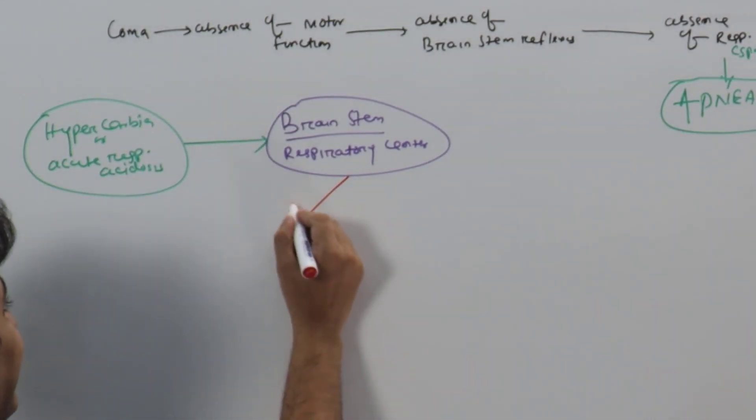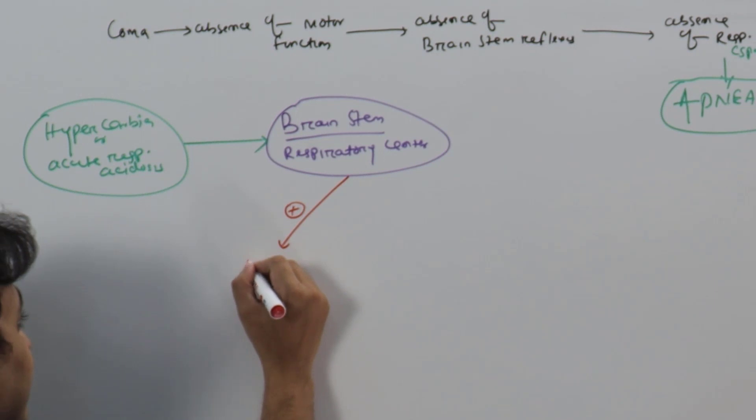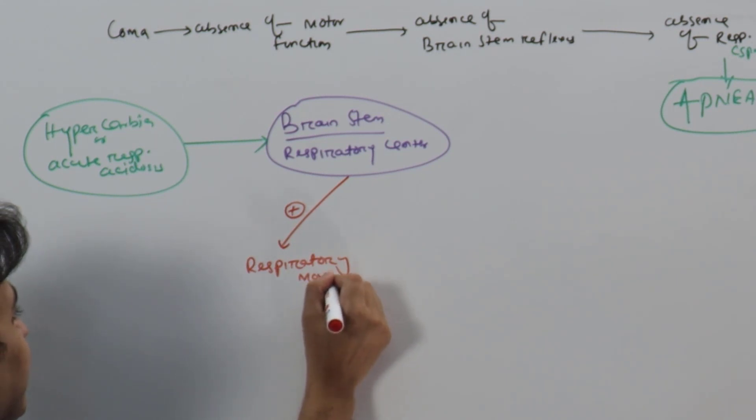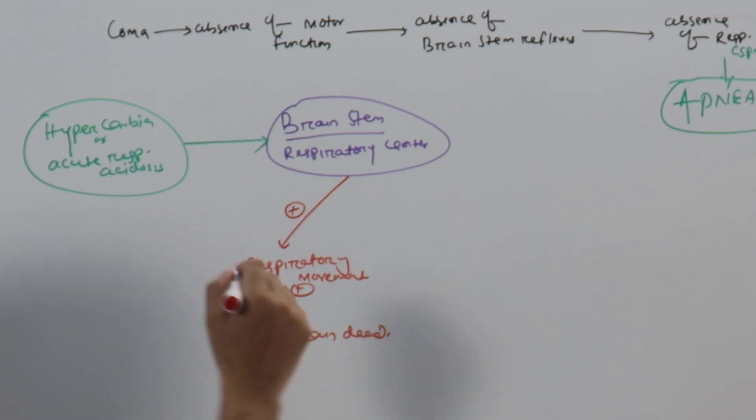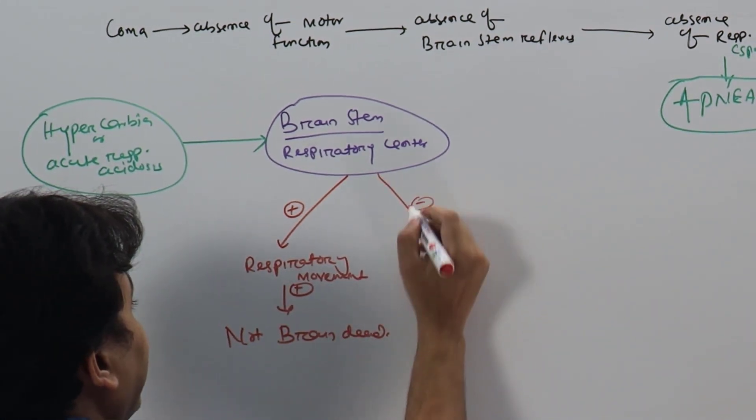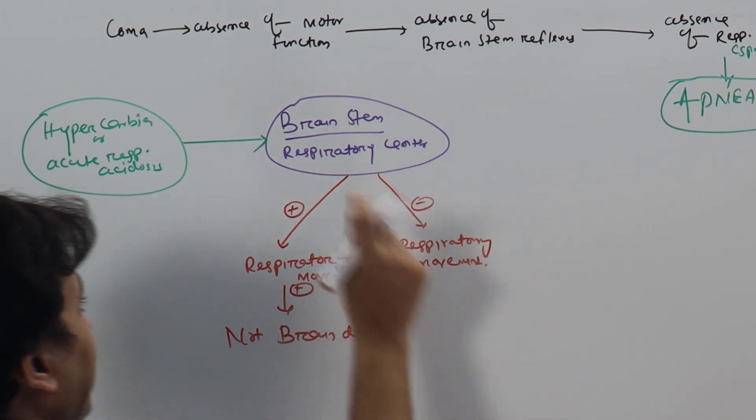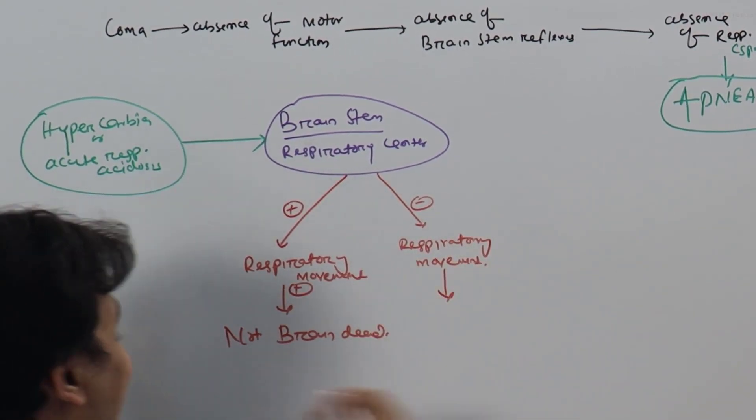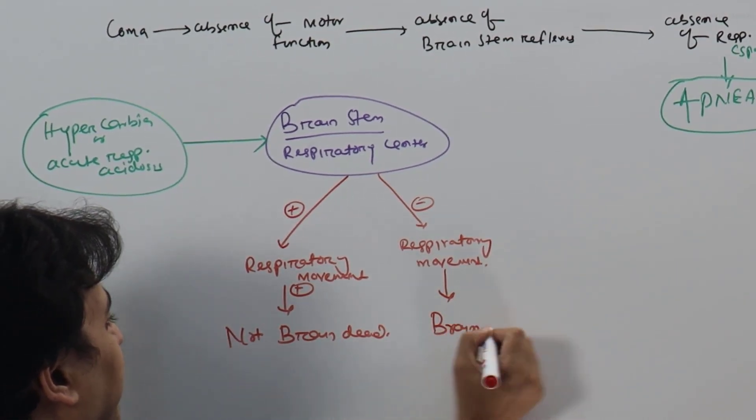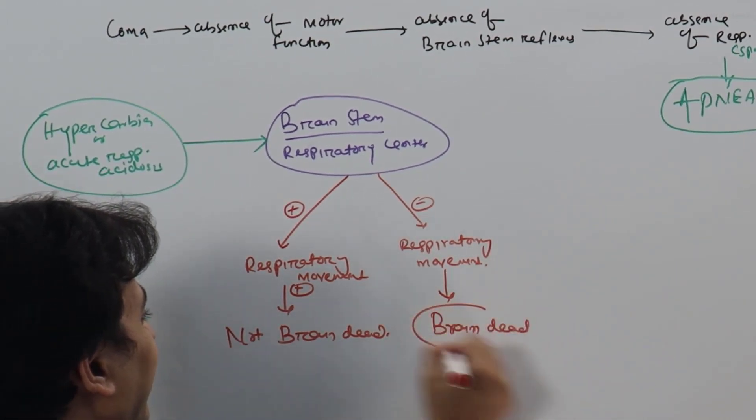If the brain stem is functioning, then we will have respiratory movement. That means person is not brain dead. However, if there is no respiratory movement in the patient, that means the brain stem is not functioning, so it indicates patient is brain dead. This is the basis of this test.